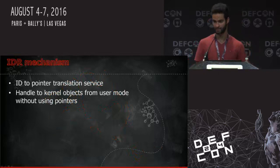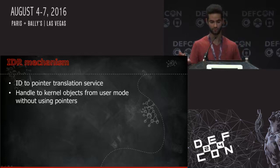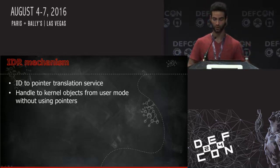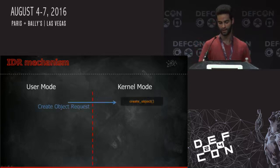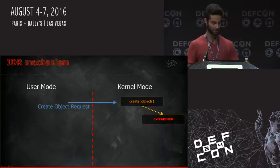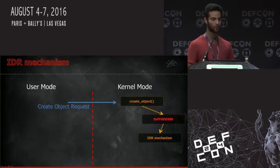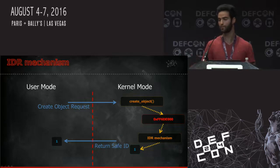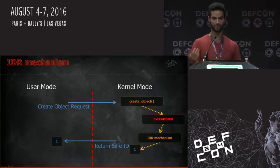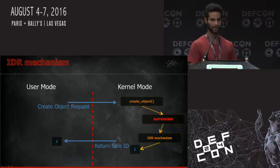IDR is a Linux kernel mechanism — not just for Android. It allows mapping between numbers, like IDs, to kernel pointers. When do you use that? Let's say we want to let the user reference a kernel object, but we don't want to reveal the kernel address of this object — so we just give them a safe ID. The user wants to create an object, so it sends the kernel a create object request. The kernel allocates data and initializes a new object. The kernel doesn't want to give back this address to the user, so instead it passes this address to the IDR mechanism, which maps between this address and the number one. The number one is returned to the user. Each time the user wants to update or destroy the object, it sends the kernel: 'update object ID 1.' The kernel uses the IDR mechanism to get the address from that ID.